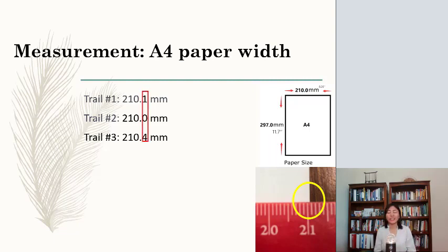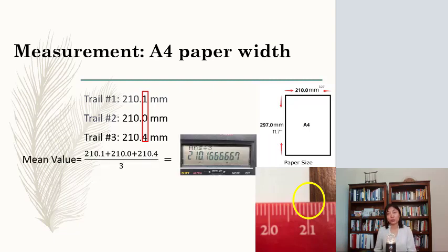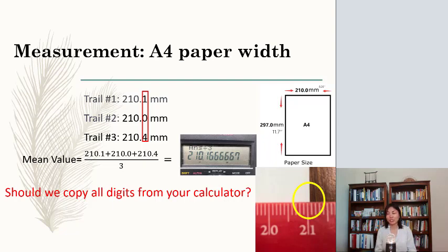So those are the digits that we are not sure. If you plug in all those numbers into your calculator to get mean value, this is what you're going to get. We have a real trouble here. Should we just copy all the digits from your calculator? The answer is no. It is wrong to copy all the digits. But then how many digits should we keep? How to use the number correctly?